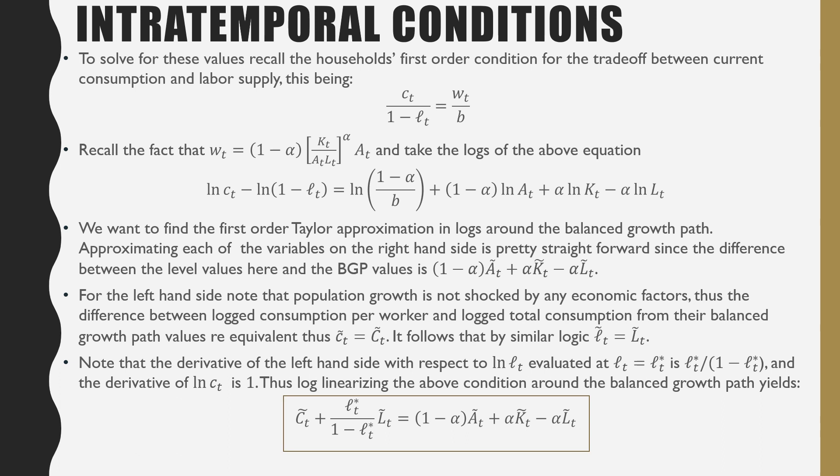Thus, the log linearized condition around the balanced growth path yields the following, where we have capital Ct plus Lt star over 1 minus Lt times capital Lt, which is labor stock, the log linearized labor stock, is equal to 1 minus alpha times A tilde plus alpha K tilde minus alpha L tilde.